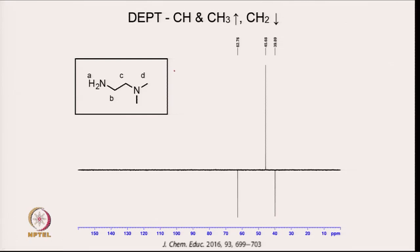Coming back to the same compound: in DEPT 135, CH and CH3 peaks appear up and CH2 peaks appear down. There are 2 downward CH2 peaks corresponding to the two CH2 groups, and one upward peak for CH3. Therefore, the carbon at 45.68 ppm is assigned to the CH3 group. This is the way you can assign proton and carbon peaks using 1D NMR experiments.